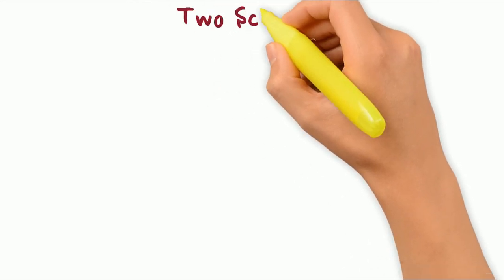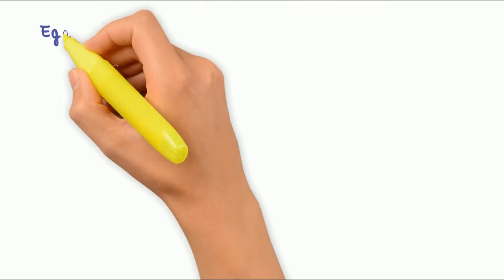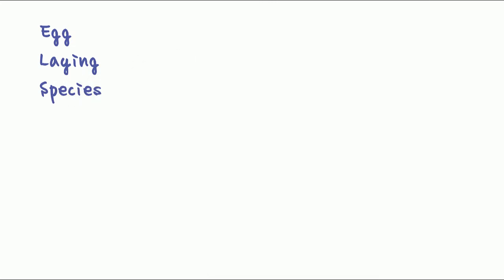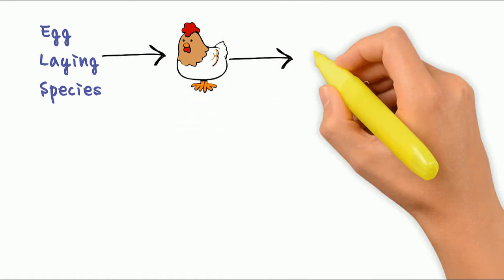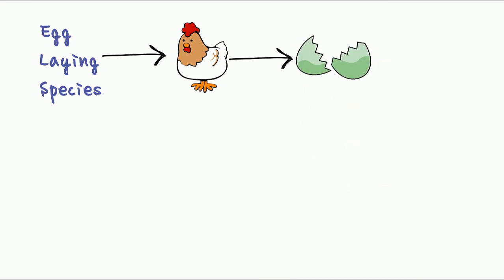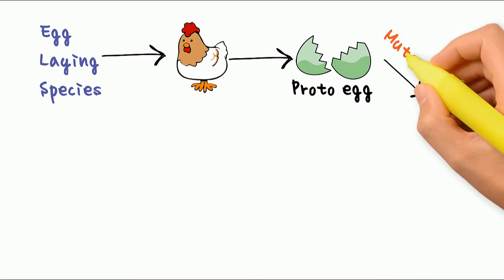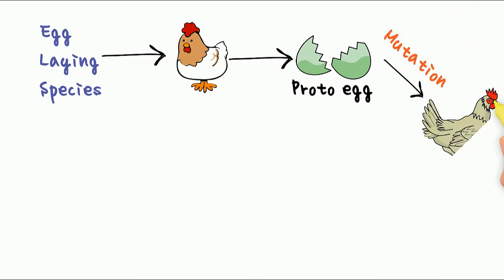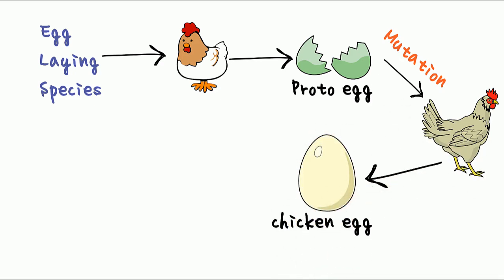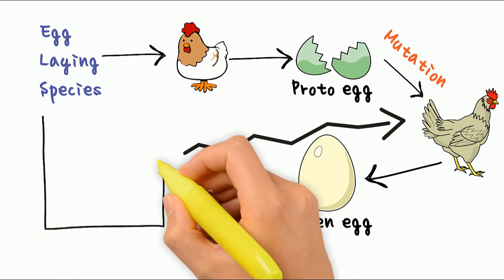We are left with two scenarios. Some early egg-laying species gradually led to the creation of the proto-chicken, which laid proto-chicken eggs. In one of these eggs, there was a mutation causing a slight change and selective advantage, and this was ultimately the first chicken, which went on to lay chicken eggs. In this case, the chicken technically came first.